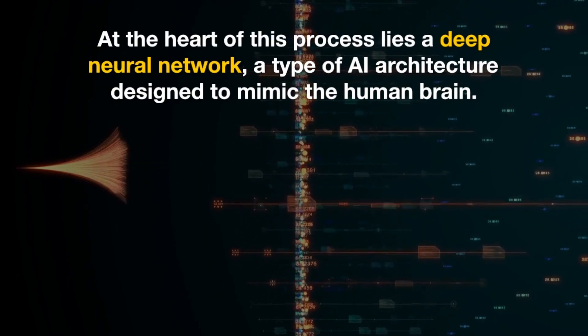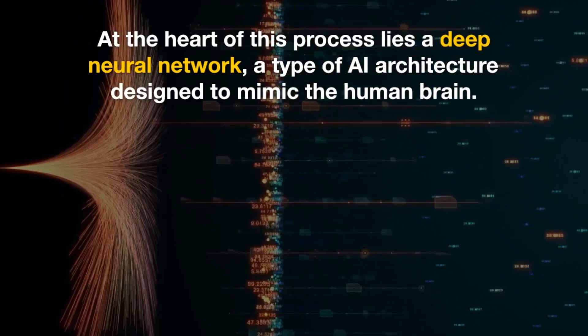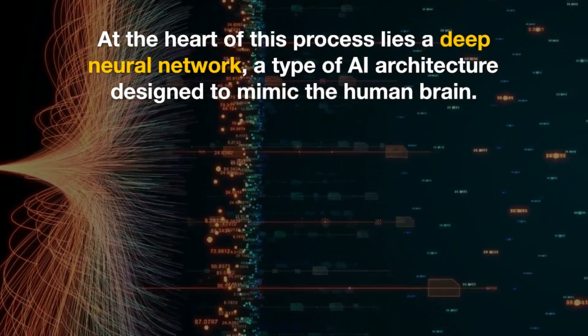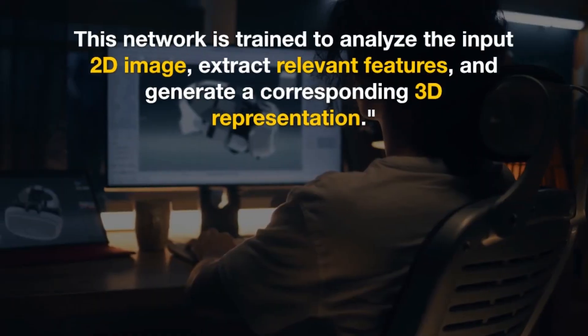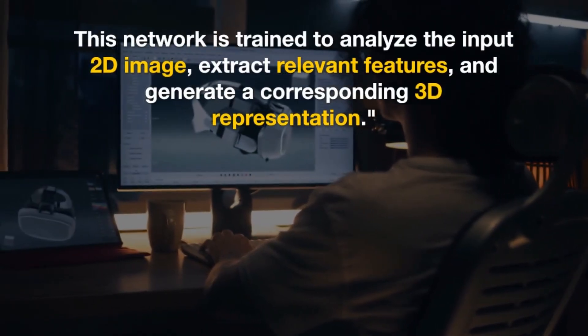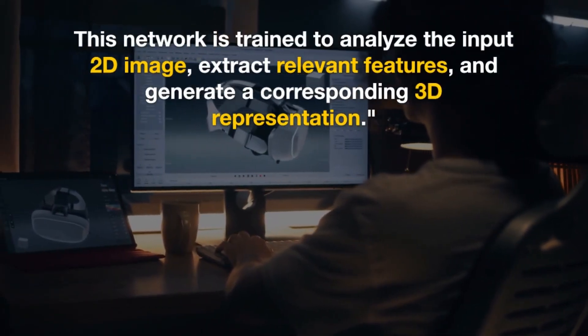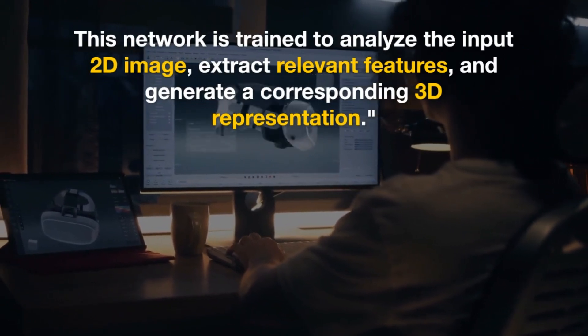At the heart of this process lies a deep neural network, a type of AI architecture designed to mimic the human brain. This network is trained to analyze the input 2D image, extract relevant features, and generate a corresponding 3D representation.